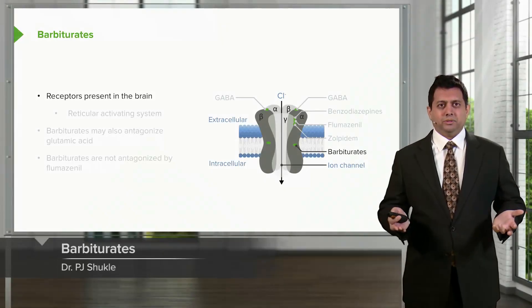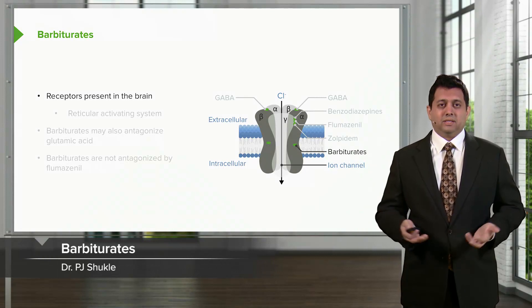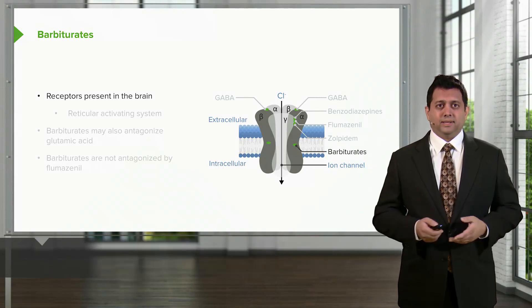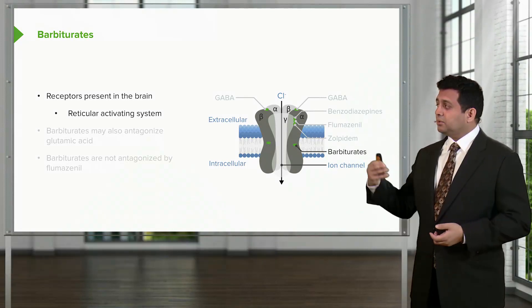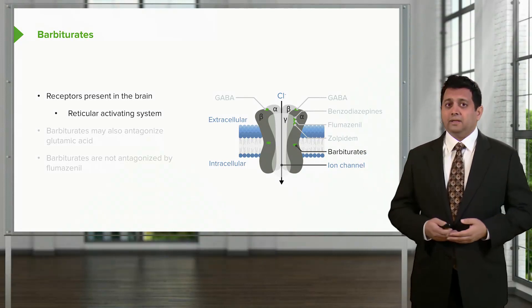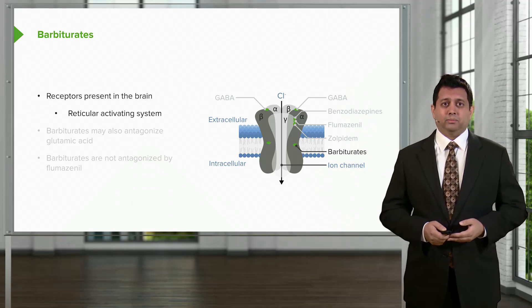Let's move on to the barbiturates. The barbiturate receptors, the GABA-A receptors, are also present in the brain. We see those ones often in the reticular activating system of the brain.